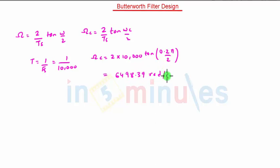Now the value of N is also given, so it is not necessary to calculate. We have found out the cutoff frequency and order of the filter. We will calculate now the poles value.